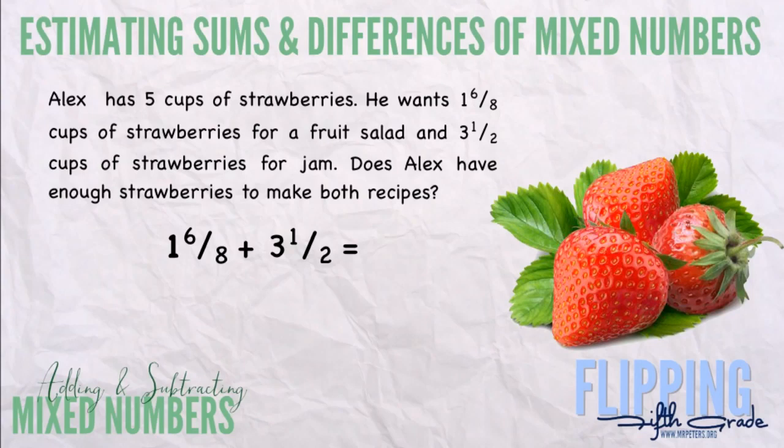Alex has five cups of strawberries. He wants one and six-eighths cups of strawberries for a fruit salad and three and one-half cups of strawberries for jam. Does Alex have enough strawberries to make both recipes? So we're looking at the problem one and six-eighths plus three and a half.